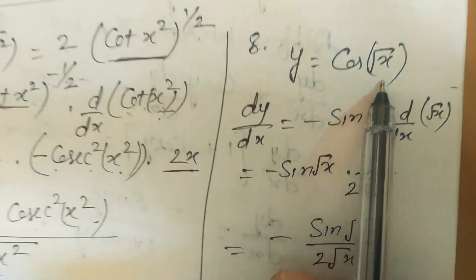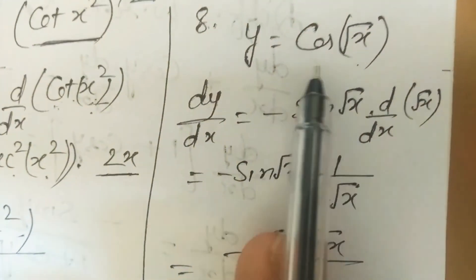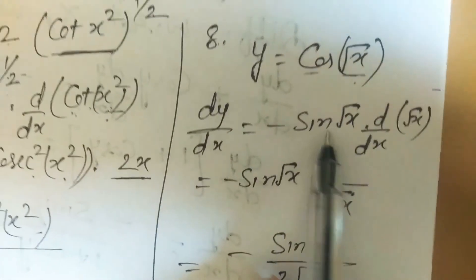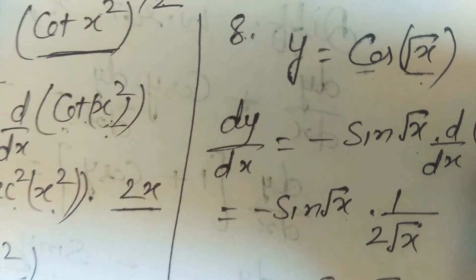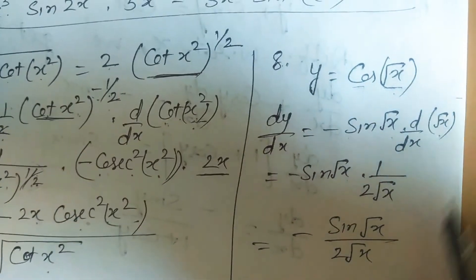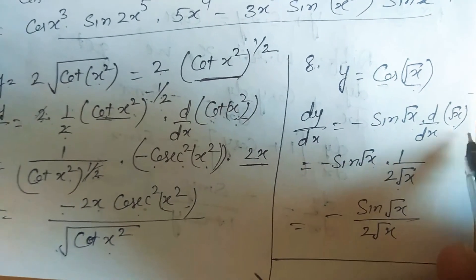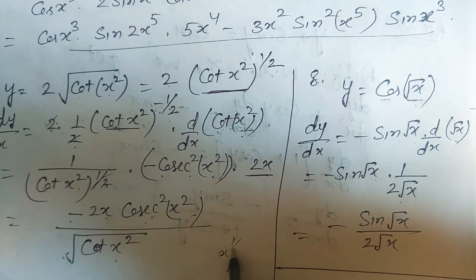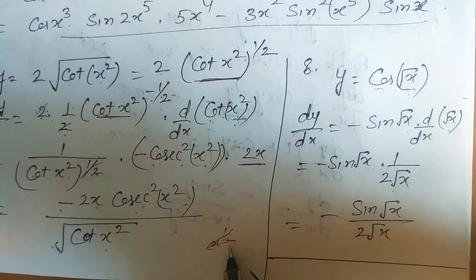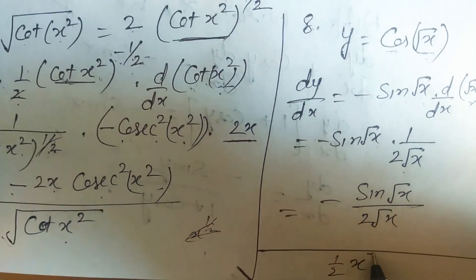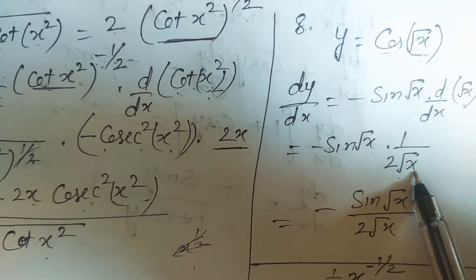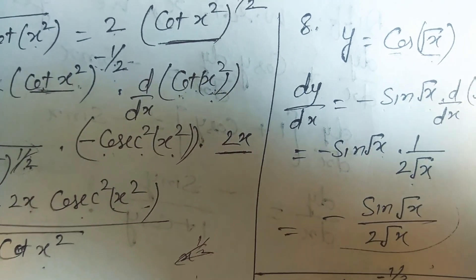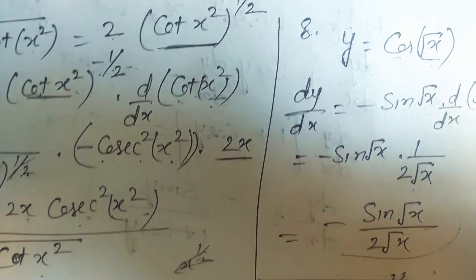Question 8: y = cos(√x). Apply chain rule: −sin(√x) · d/dx(√x) = −sin(√x) · 1/(2√x). Since √x = x^(1/2) and its derivative is (1/2)x^(−1/2) = 1/(2√x), the answer is −sin(√x)/(2√x). Questions 9 and 10 will be done later in exercise 1.